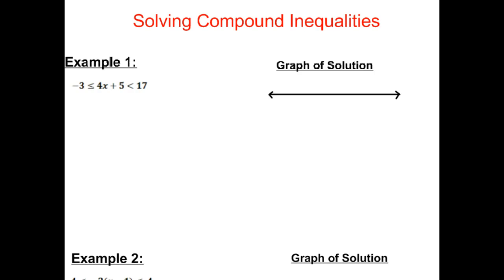Let's look at a couple of examples. Our first example says -3 ≤ 4x + 5 < 17. We're going to solve it the same way we solve any inequality, just solving two at the same time.